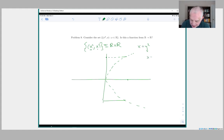For instance, if x is minus one, then you have the point one minus one in the function. But you also have the point